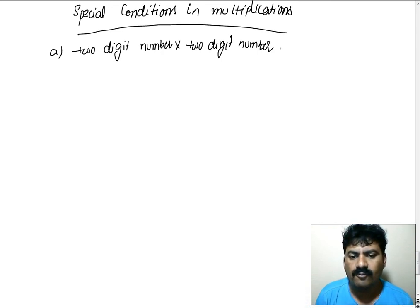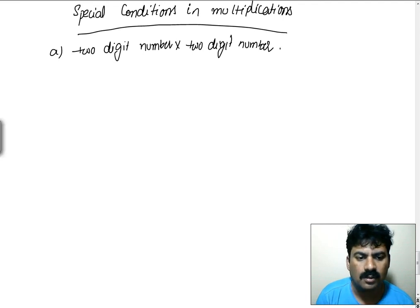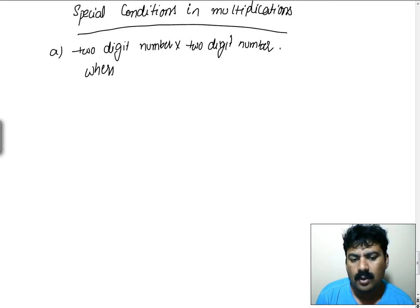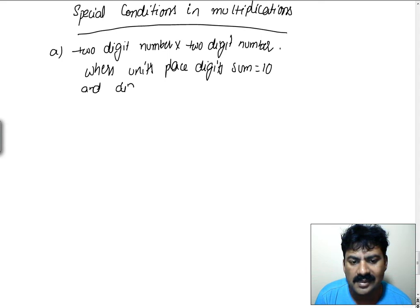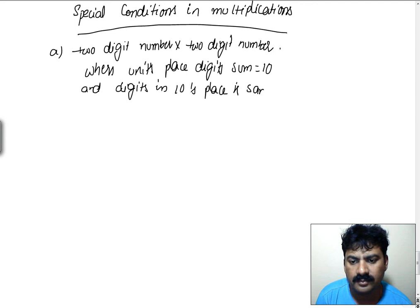When there is a need of multiplying a two-digit number by a two-digit number, I am going for a special condition: when the units place digits sum is equivalent to ten, and the digits in the tens place are the same, then I need to do some simple calculation.